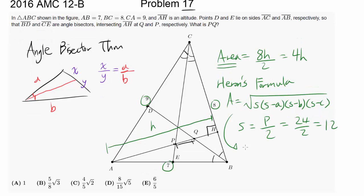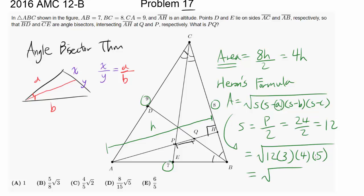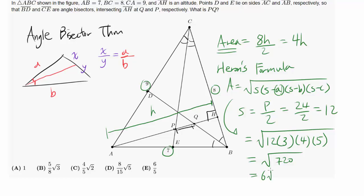Plugging into Heron's formula: area equals square root of 12 times (12 minus 9) times (12 minus 8) times (12 minus 7), which is square root of 12 times 3 times 4 times 5, or square root of 720. Taking out 36 gives 6 times square root of 20; taking out 4 gives 12 times square root of 5. So the area is 12√5, meaning 4H equals 12√5 and the height H equals 3√5.